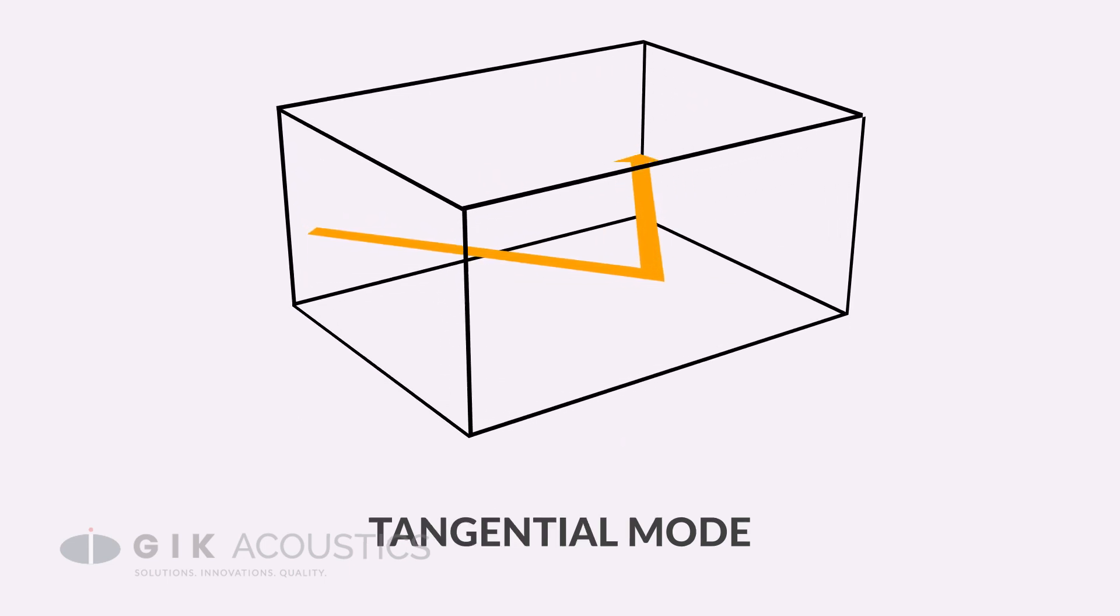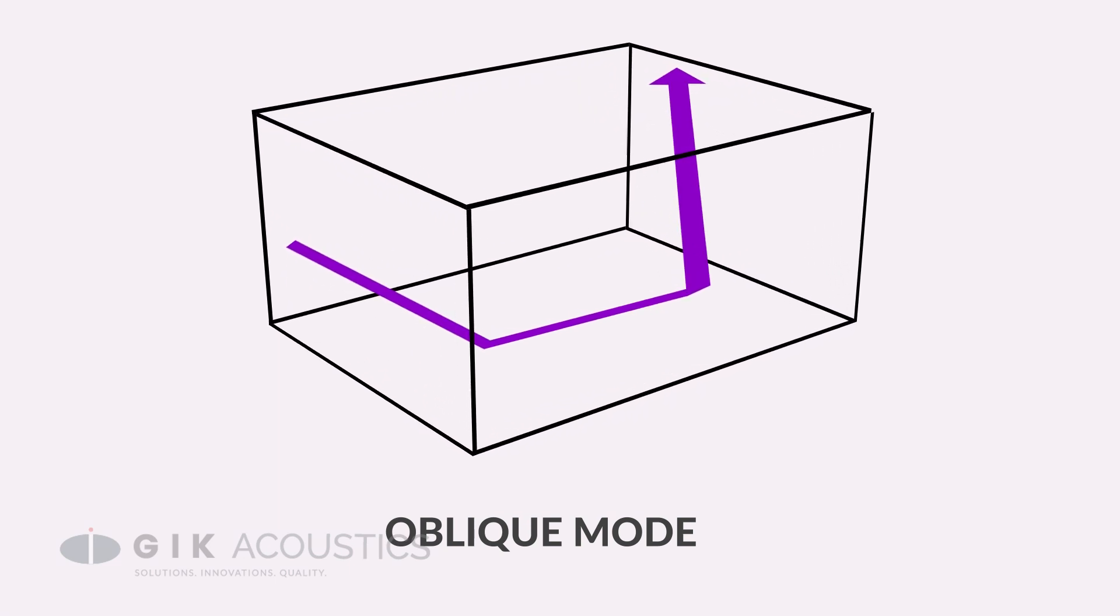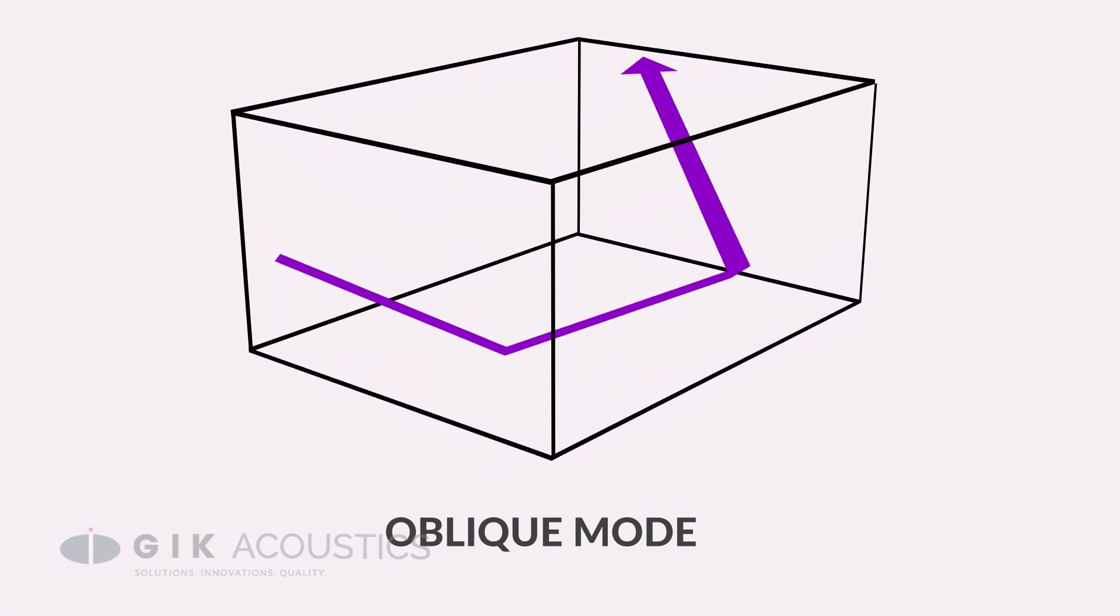A tangential room mode will act across two dimensions, whereas an oblique room mode will act across three and is the weakest of the three room modes.